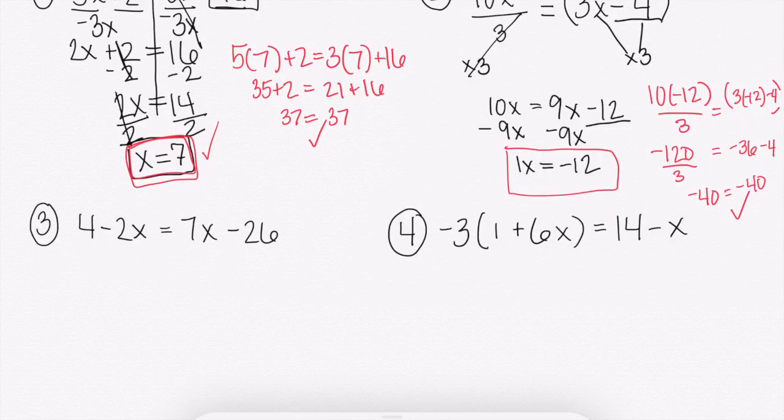This time with number 3, we have 4 minus 2x. So instead of subtracting our x's to the other side, you could also add your x's to the other side. So we have 4 minus 2x. How do we get rid of minus or a negative 2x? We're going to add 2x. Do it to both sides. A negative 2x and a positive 2x would just get a 0.